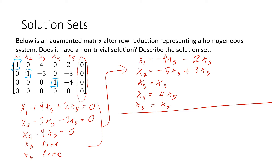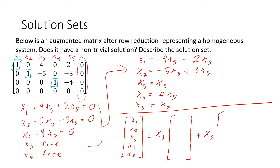Now I'm going to describe this solution set in terms of vectors. My free variables are x3 and x5, so every solution can be written as x3 times something plus x5 times something. Taking the coefficients of x3, I get negative 4, negative 5, 1, 0, and 0. Taking the x5 coefficients, I get negative 2, 3, 0, 4, and 1.